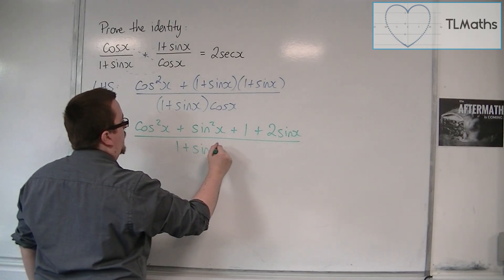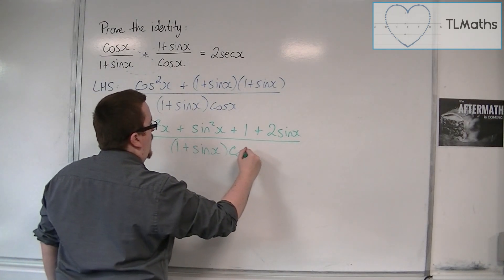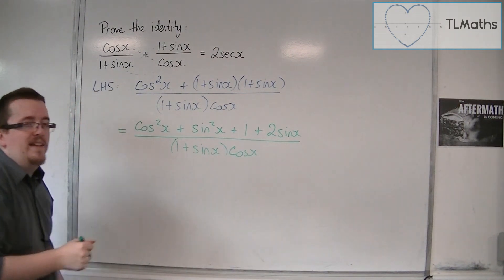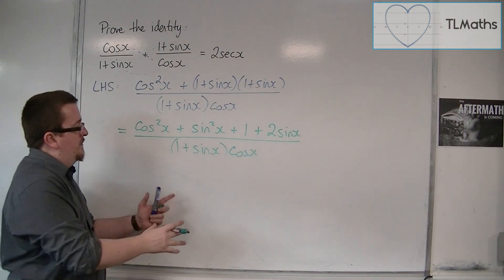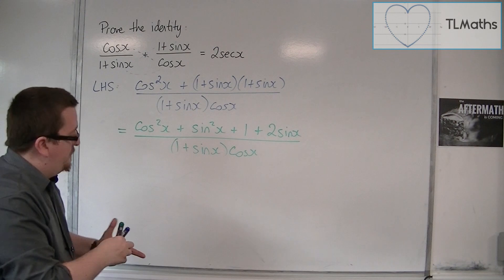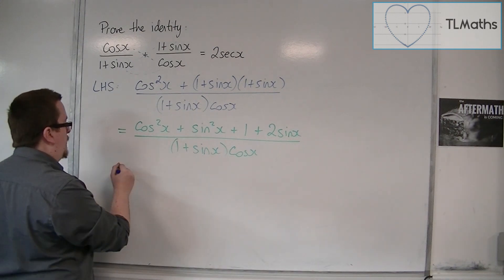Divided by, we've still got that 1 plus sin x times cos x. Now I'm reluctant to expand that bracket out, so leave it alone for the moment and let's see what happens.